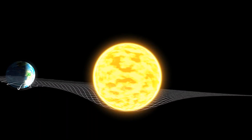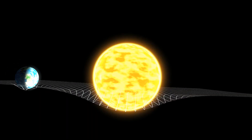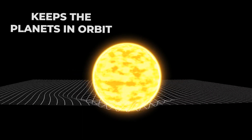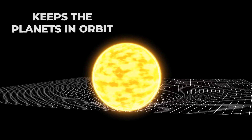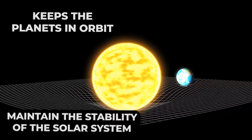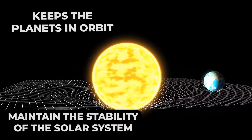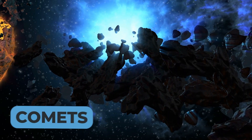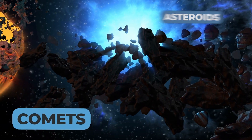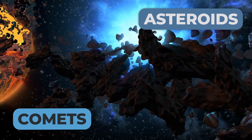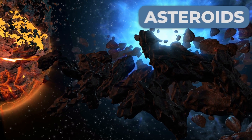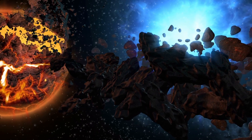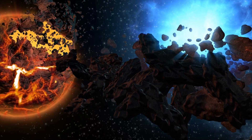The Sun's gravity also plays a crucial role in the solar system. It keeps the planets in orbit and helps to maintain the stability of the solar system. The Sun's gravity also affects comets and asteroids, influencing their paths and potentially leading to collisions with other objects in the solar system.